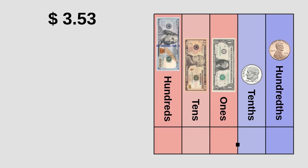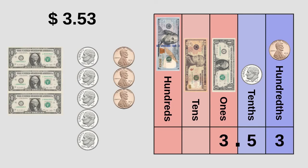We start with the dollar part — in this case three dollars — and put it in the ones column. Now we continue with the cents part, in this case 53 cents. The five goes in the tenths column and the three in the hundredths column. As we can see, we need three one-dollar bills, five dimes, and three pennies if we want to buy something that costs three dollars and 53 cents.